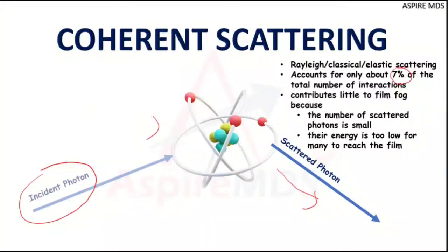Coherent scattering contributes very little to film fog because the number of electrons involved is very low — only seven percent — and their energy is also very less, so it will not contribute significantly to the film. Now let's talk about another kind of interaction.